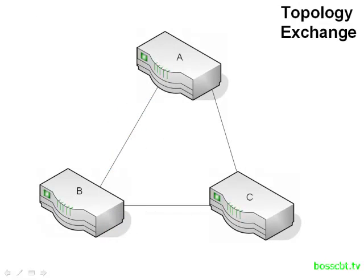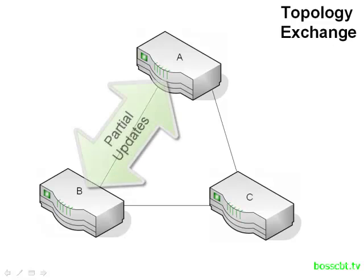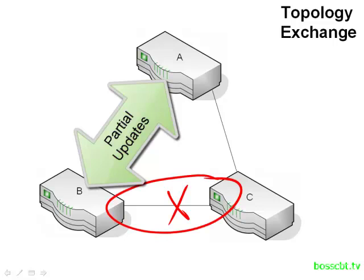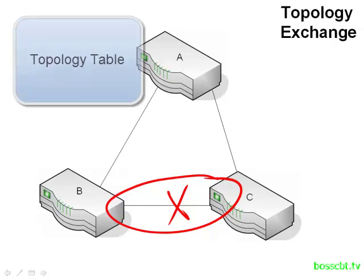Once routers have neighbors, they exchange route information. When routers first become neighbors, they exchange their entire routing table — but only once. After that, only changes to the routing table will be exchanged as partial updates. For example, if a link between routers B and C were to fail, router B sends only that specific change to router A. All of this information is stored in a topology table, though EIGRP doesn't hold as much detailed information as OSPF does.